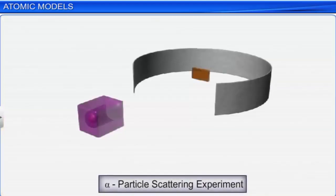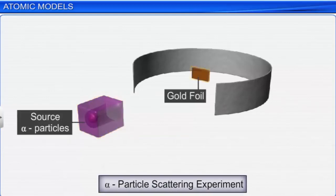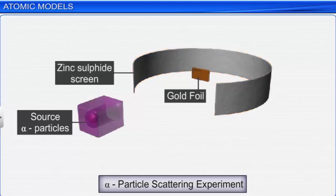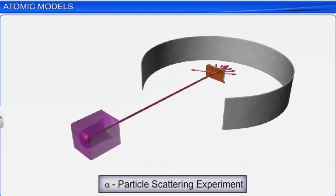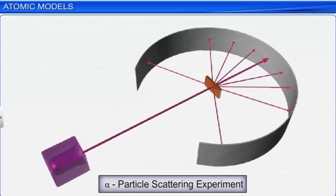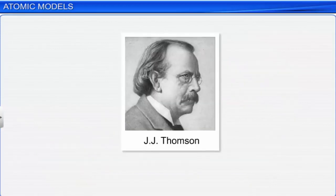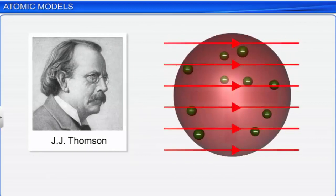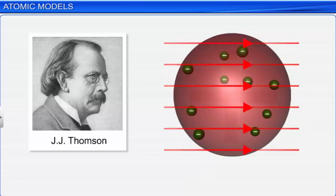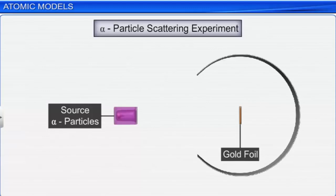In the alpha particle scattering experiment, a stream of high energy alpha particles from a radioactive source was bombarded on a very thin gold foil. The thin gold foil had a circular fluorescent zinc sulfide screen around it. Whenever alpha particles struck the zinc sulfide screen, a tiny flash of light was produced at that point. If Thomson's model were correct, then all the alpha particles should pass through the gold foil almost undeflected, because the entire mass and positive charge is uniformly spread throughout an atom. However, the observations were quite contrary to these expectations.